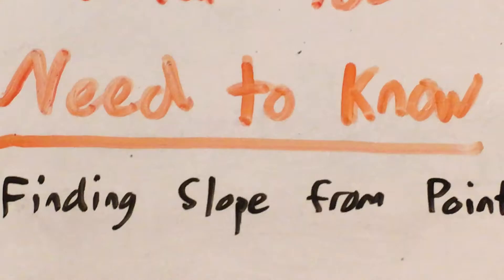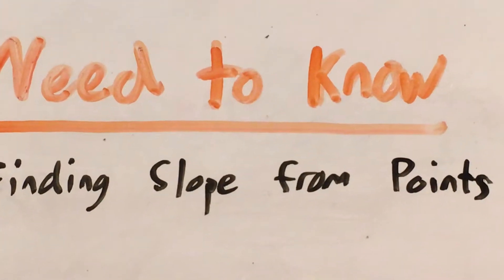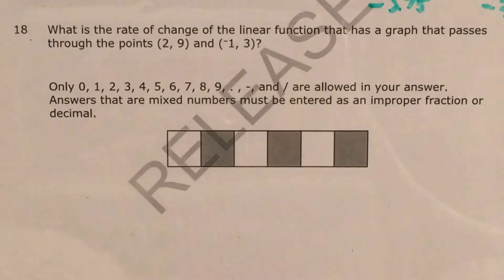So to do a question like this we just need to know how to find slope, which is another word for rate of change, from two points that a problem gives us. There was another question just like this where I used the graph and then moved on to the slope formula.